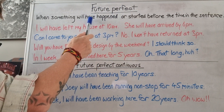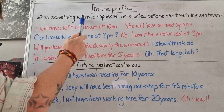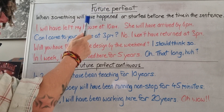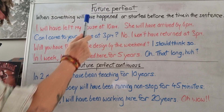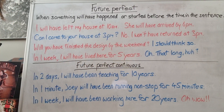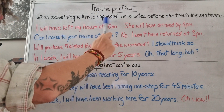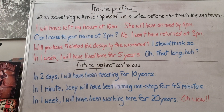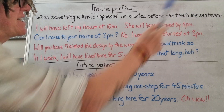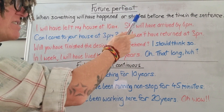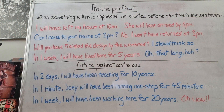We always use infinitives after modal verbs, and when it's a perfect sentence we have to use the perfect infinitive, which is 'have', and then the past participle. We always use past participles in perfect sentences. So something happens before a time in the sentence, or something has started before the time in the sentence.